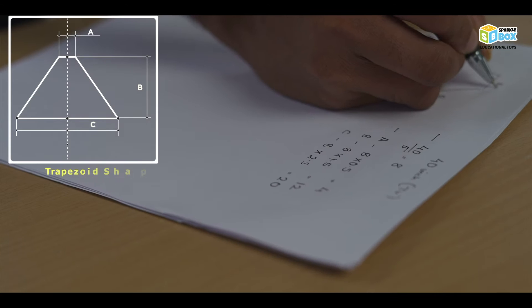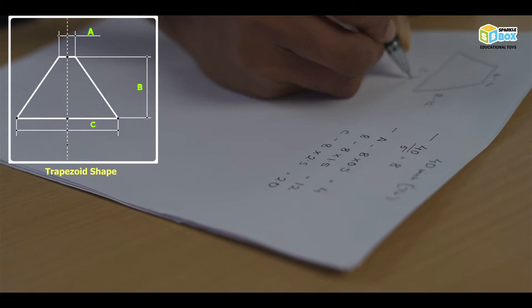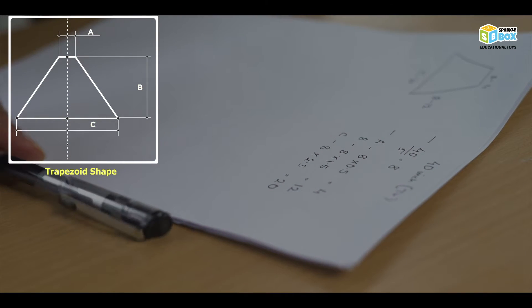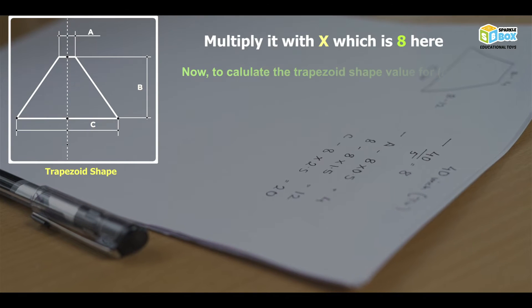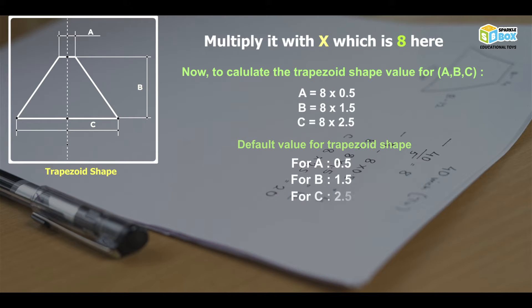Step 2, let's call the sides of the trapezoid as a, b and c. Now, to get the values of a, b and c, multiply it with x, which is 8 here. For a, multiply it with 0.5. For b, multiply it with 1.5. And for c, multiply it with 2.5. So, 0.5, 1.5 and 2.5 are the default values here to get the values of sides a, b and c respectively.